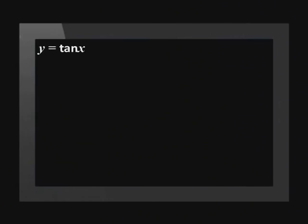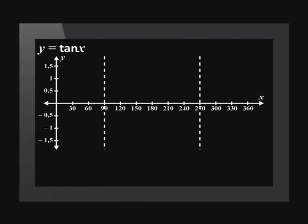The last trigonometric function we must revise is the tangent function. The equation of the tan graph is y equals tan x. The tan graph has asymptotes at x equals 90 and x equals 270 degrees. We draw these in as dotted lines.